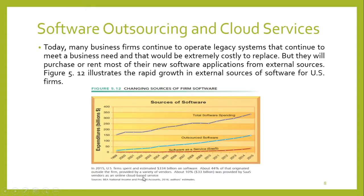About 44% of that 334 billion originated outside the firm, provided by a variety of vendors. About 10% was provided by software as a service vendors as an online cloud-based service. So total spending is one line, the light blue line shows outsourced software, and the maroon line shows spending on software as a service. The remaining 46% is your own customized in-house software.